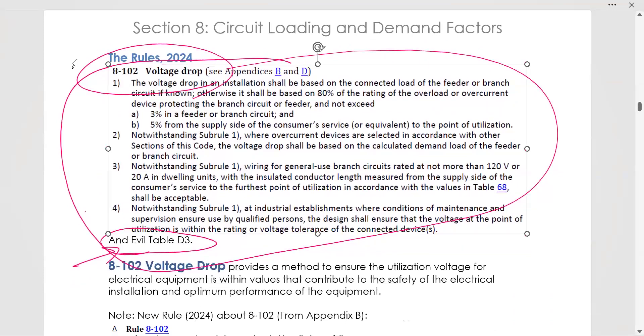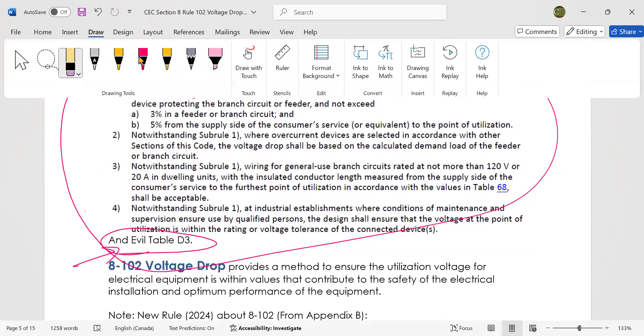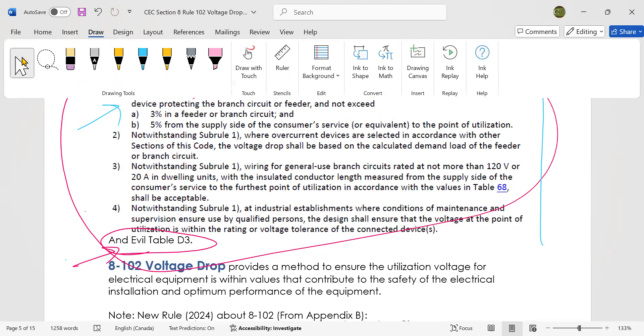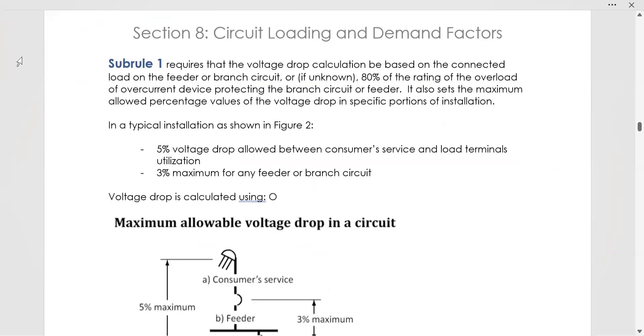So let's talk about what it says in 8.102 voltage drop. Rule one, I mean, subsection one, subsection one here, let's get another color here. Subsection one just says that the voltage drop can't be more than 5% from the source to the load. And it can't be more than 3% in a feeder or branch circuit. All right, so I'll show you where that is. I mean, I'll show you a diagram of that.